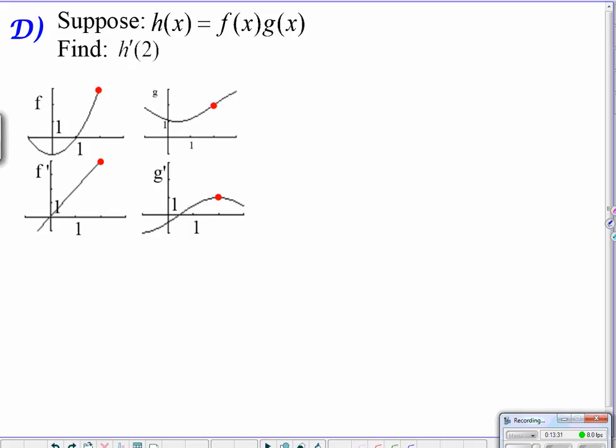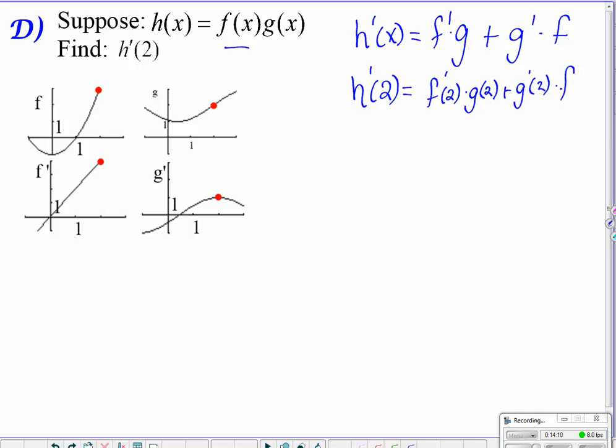On to D. Let's suppose that h of x is equal to f of x times g of x. That's kind of similar to last time. So, find h prime of 2. Well, let's develop a game plan. h prime of x is equal to derivative of the first times the second plus derivative of the second times the first. I need to evaluate this time at 2. So, this is now going to look like f prime of 2 times g of 2, added with g prime of 2 multiplied by f of 2. And this time we get all our information graphically.